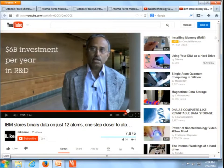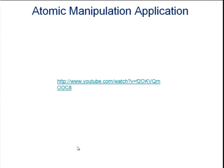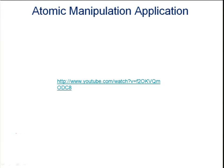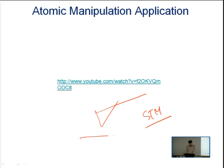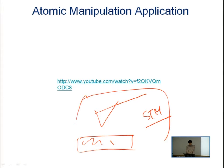This scanning probe microscope is a pretty powerful tool — not only for making images but also for manipulating atoms. The problem is that STM only works with conducting materials; both the probe and sample must be conductors. Additionally, this technology must be operated in a very high vacuum environment.